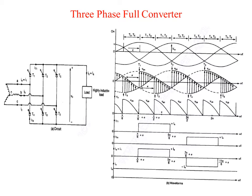During the interval omega t greater than or equal to pi by 6 plus alpha and less than or equal to pi by 2 plus alpha, thyristors T1 and T6 conduct and line-to-line voltage VAB appears across the load. This line-to-line voltage VAB is equal to VAN minus VBN.